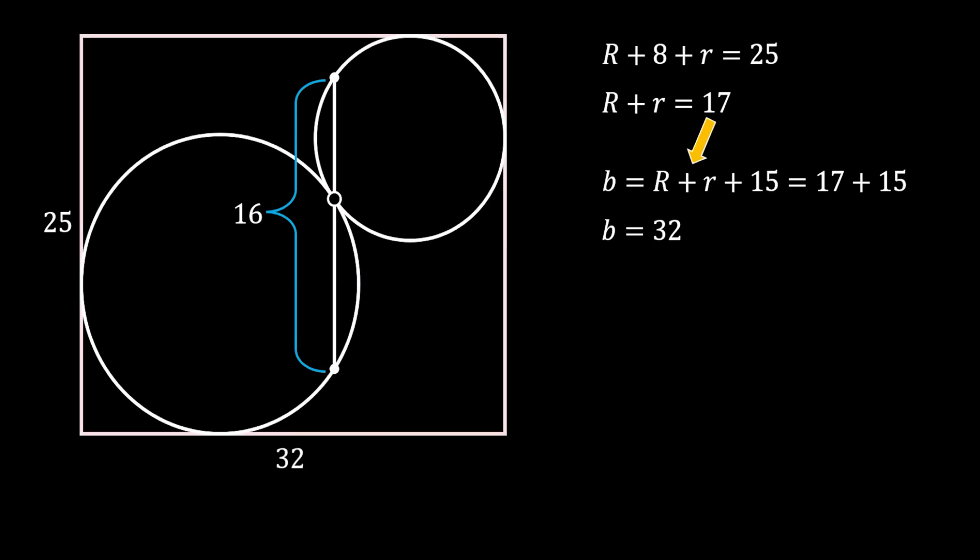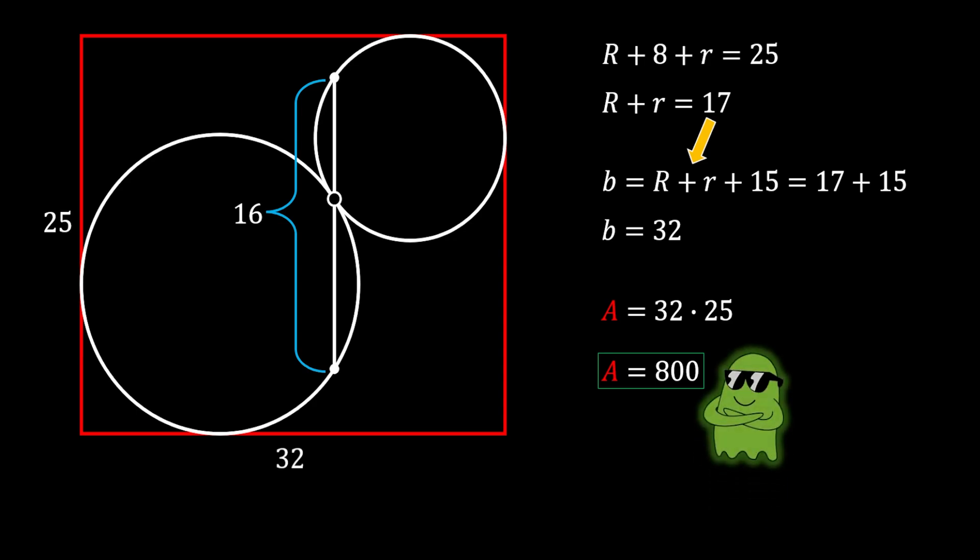Now, it's pretty easy for us to find the area of the rectangle as the product of the base and the height. So, in our case, that is 32 times 25. And we will get that the area of our red rectangle is equal to 800 squared units. And this is our solution.